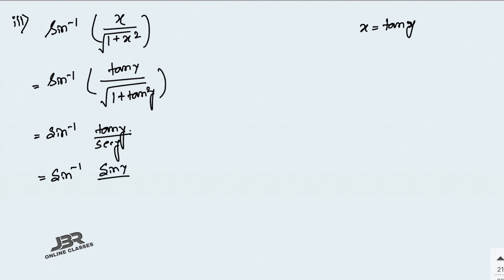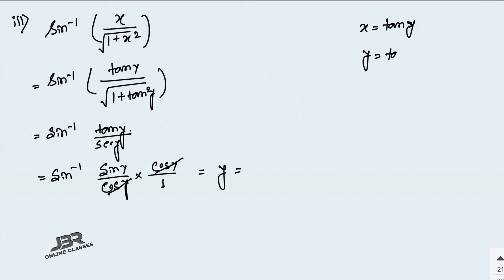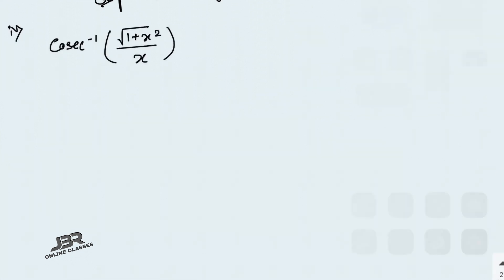So we have sin inverse of tan y over sec y. Since tan y equals sin y over cos y, and sec y equals 1 over cos y, dividing gives sin y. So sin inverse of sin y equals y, and since x equals tan y, y equals tan inverse x. That is your answer.